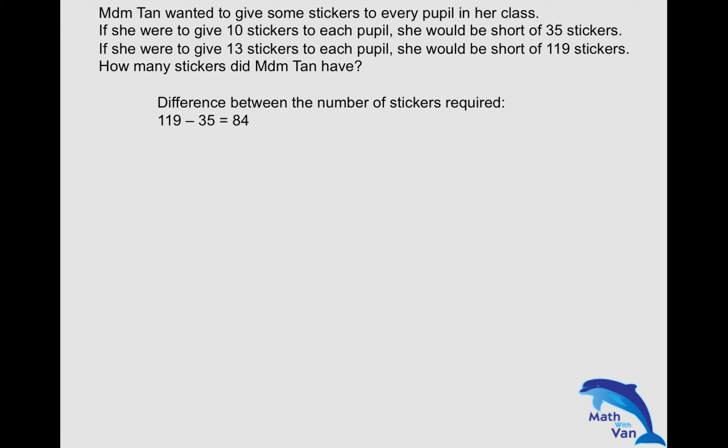And then what is the increment for each individual pupil? That is 13 minus 10, which is 3. With that, you know each pupil should give 3 more. And in total, she had 84. So the number of students can be worked out easily by taking 84 divided by 3, which is 28 students.